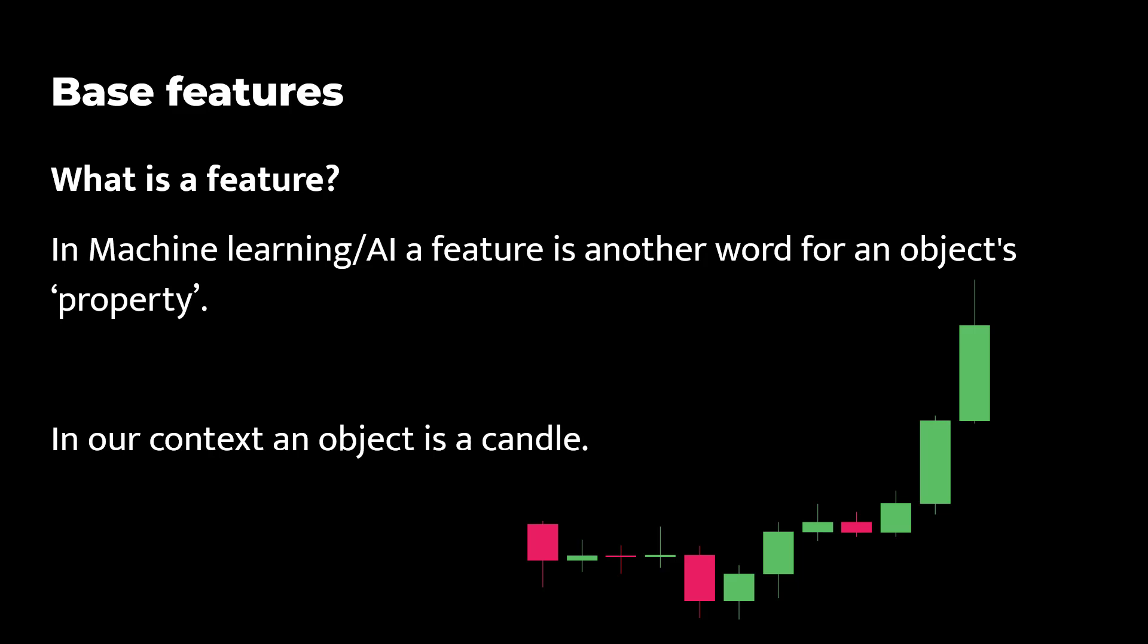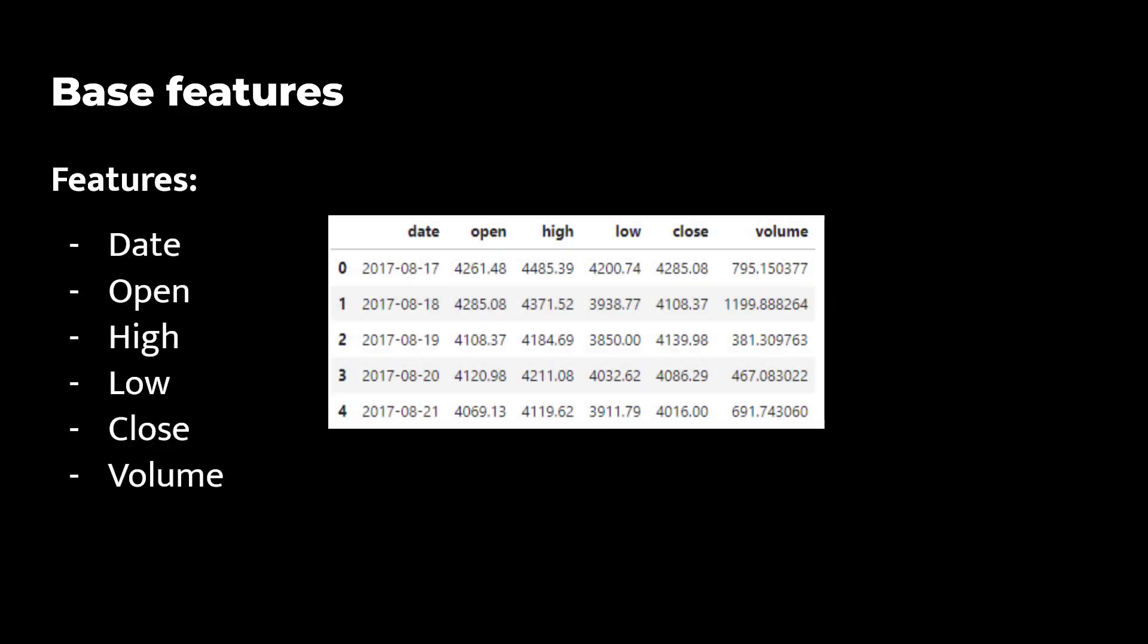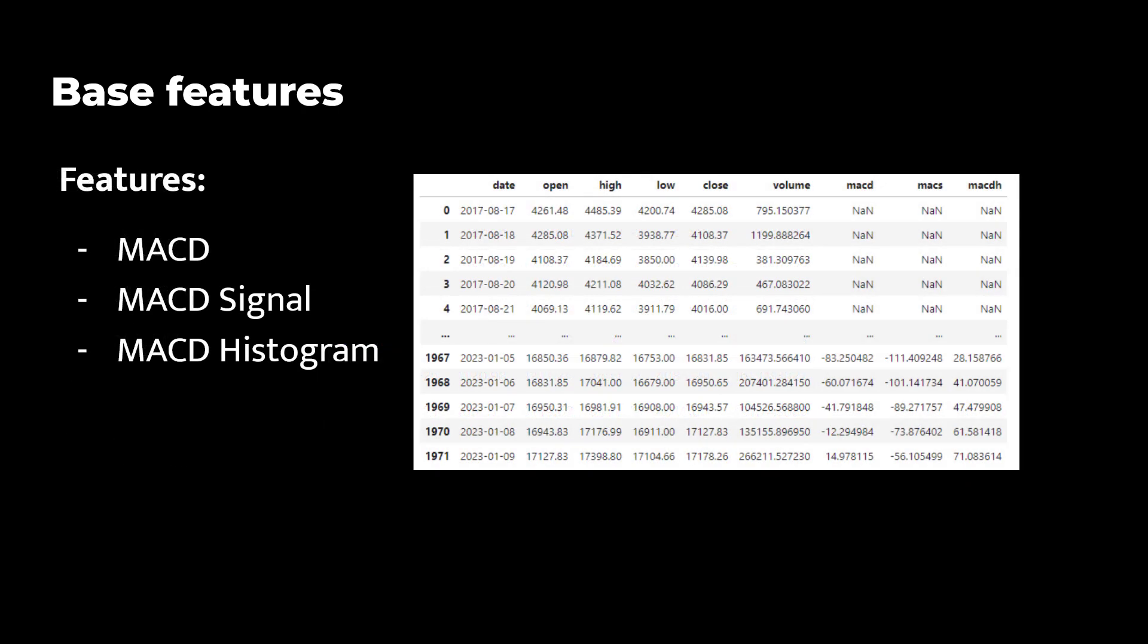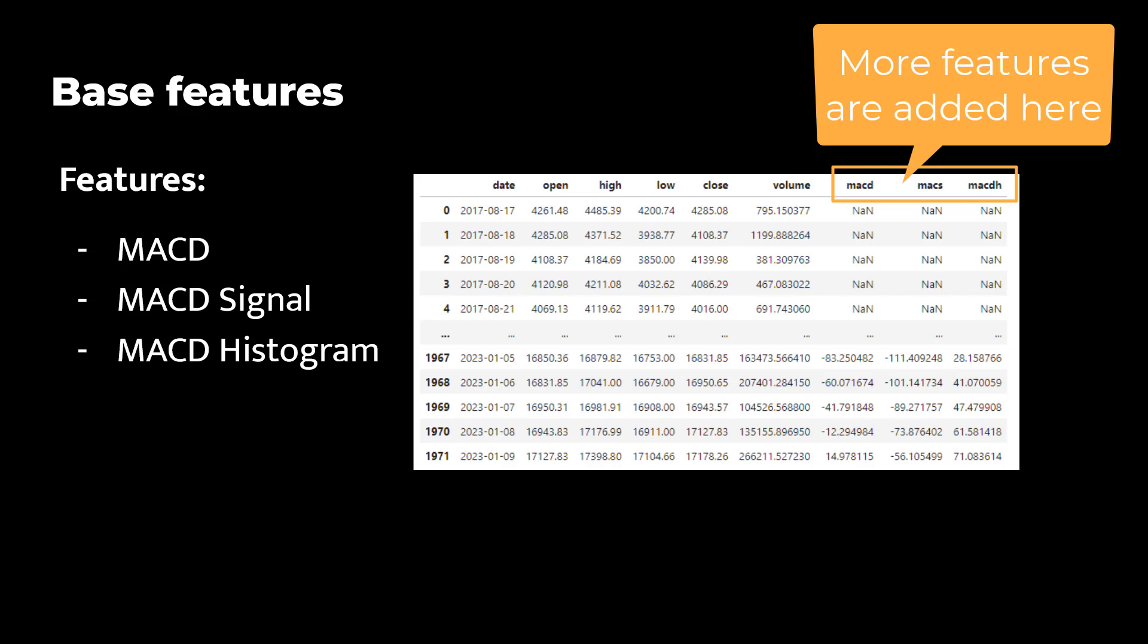And the features of a trading candle are the date, open, high, low, close and volume to begin with. If I add additional indicators, like the MACD over here, then each candle gets more columns with information about that specific candle. And all these additional values per candle are also called features.